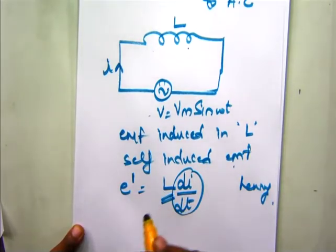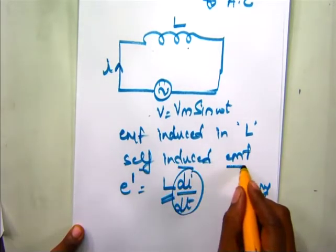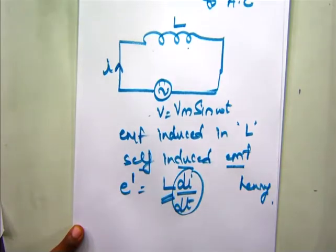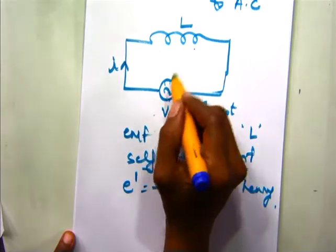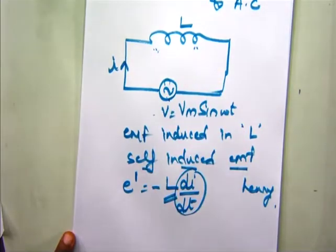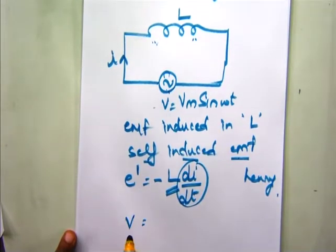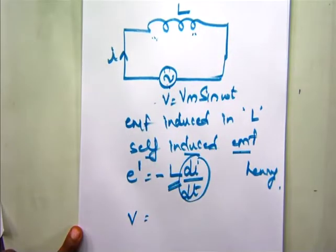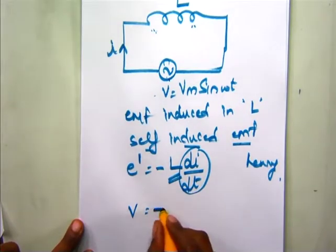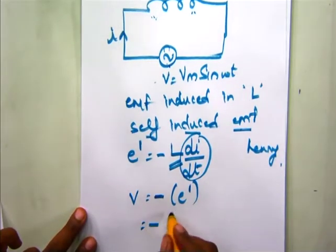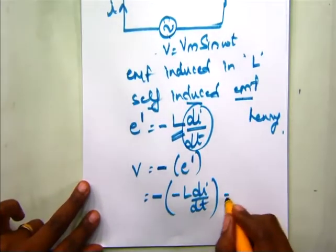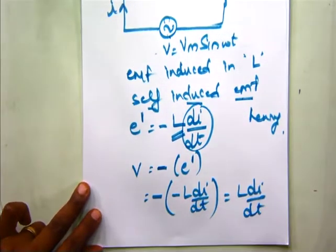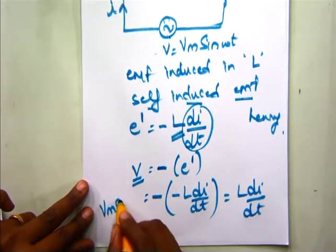The direction of the self-induced EMF is given by Lenz's law, which states that the self-induced EMF acts in such a direction so as to oppose the cause of its production. Therefore E dash becomes minus L di by dt. The applied voltage at each and every instant is equal to and opposes the self-induced voltage in the inductor. So we can write V equals minus of E dash, which equals minus of minus L di by dt, giving V equals L di by dt. But V equals Vm sin omega t.